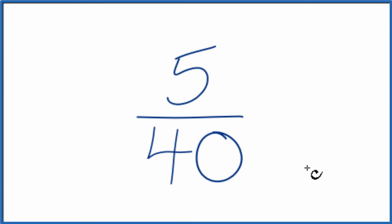To do that, we need to find the greatest common multiple, something that goes into 5 and 40. I know that 5 times 8 is 40, so I'll divide the numerator and the denominator by 5. Let's see how that works.